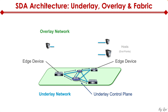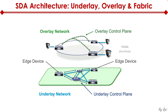On top of the underlay is the overlay network. The overlay network has its own overlay control protocol, which in this case is VXLAN. With overlay, we have virtual machines, virtual switches, and virtual constructs built on top of the physical infrastructure. With a tunneling protocol like VXLAN, we can carry packets across a layer three network while still transporting layer two packets — that's the beauty of VXLAN.